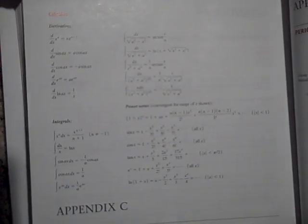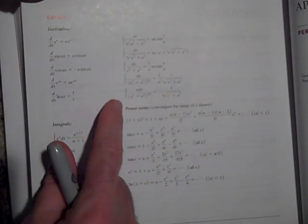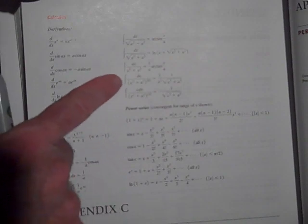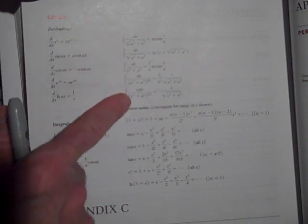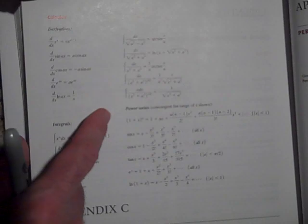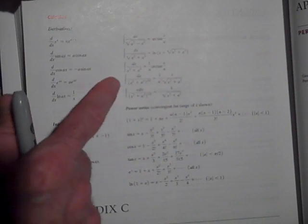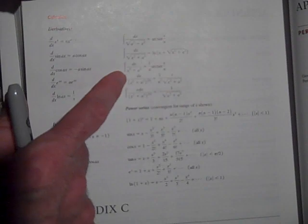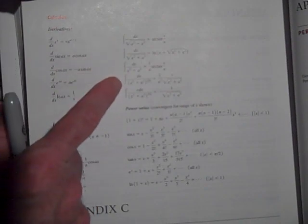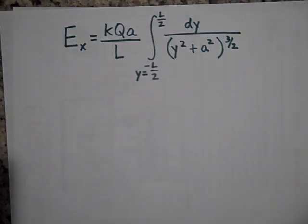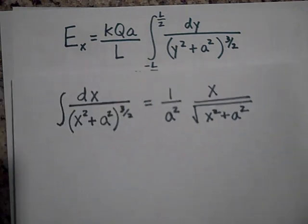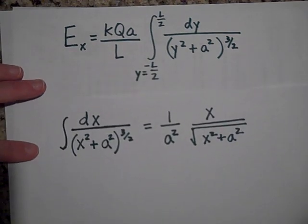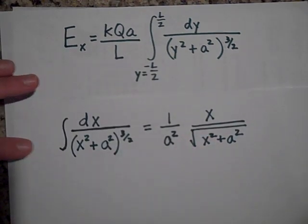Or you can go to the back of your textbook. This is Appendix B in your textbook. I know it's really tough to read here, but it's actually a table of integrals. And you just look for the integral that matches your form, and for me that would be this one right here.